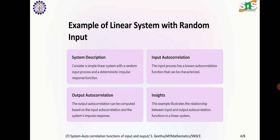Example of a linear system with random input. System description: Consider a simple linear system with a random input process and a deterministic impulse response function. Input autocorrelation: The input process has a known autocorrelation function that can be characterized. Output autocorrelation: The output autocorrelation can be computed based on the input autocorrelation and the system's impulse response. This example illustrates the relationship between input and output autocorrelation functions in a linear system.